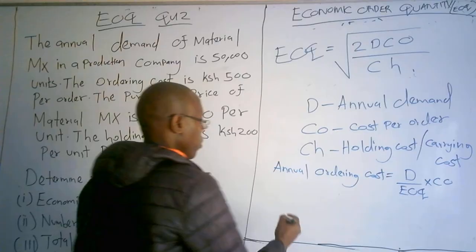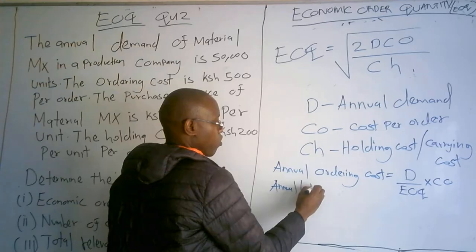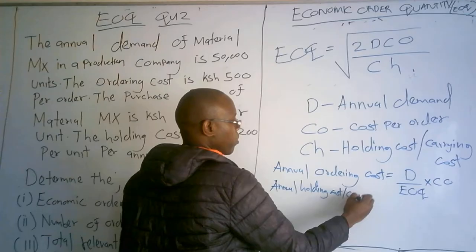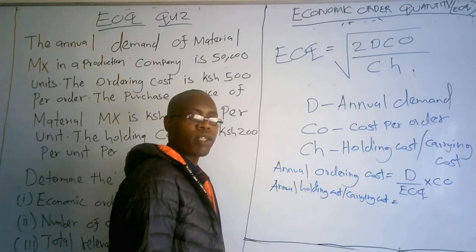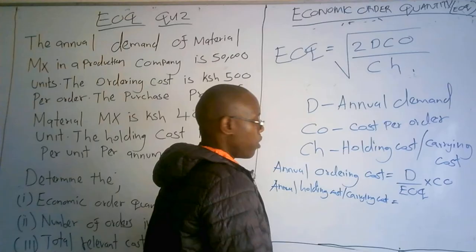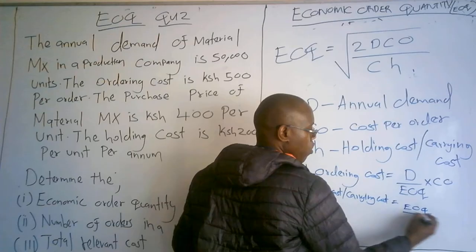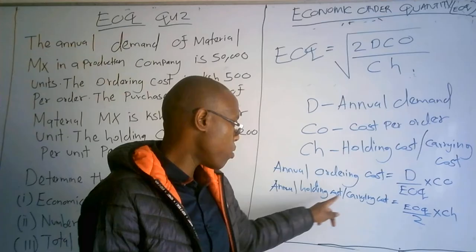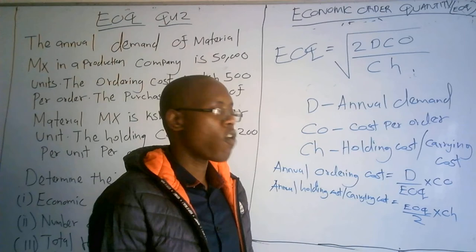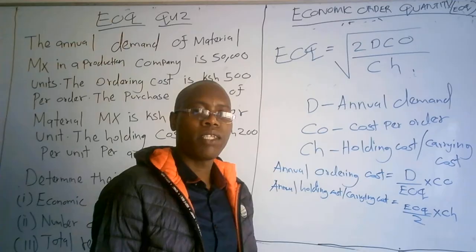The other formula you need to know is the annual holding cost, also called the carrying cost or storage cost. To get the annual holding cost, the formula is EOQ over 2, multiplied by CH. So it is EOQ divided by 2, then multiplied by the holding cost CH.